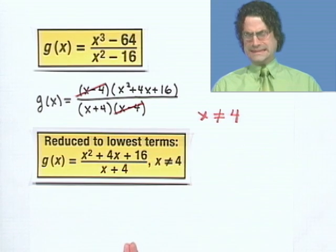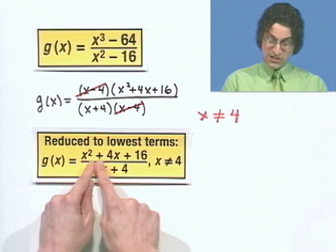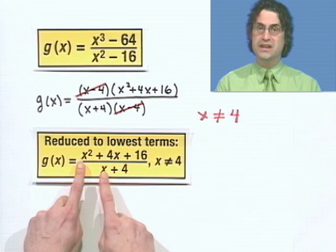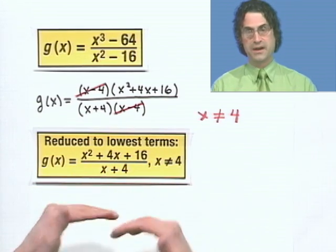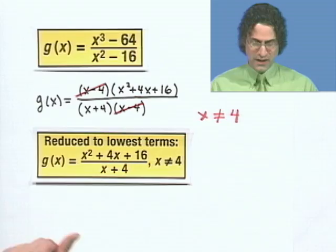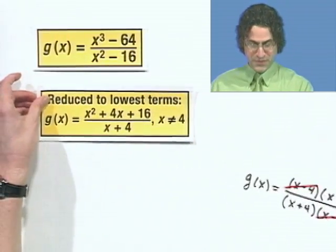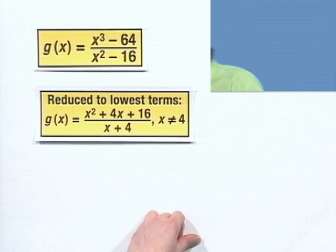Now, you might be saying, oh, I don't know, it's longer now. Before it was shorter. Yeah, but notice that now the degrees have been reduced. We always like simplifying things like that. So this is actually a good thing. All that work allowed us to convert this to this with the understanding that x cannot equal 4.